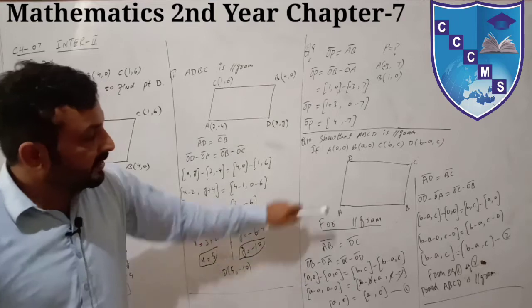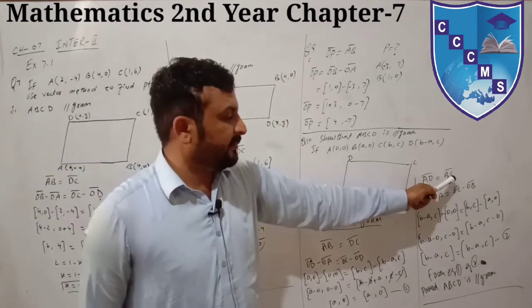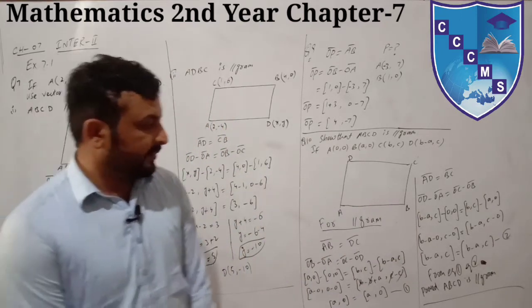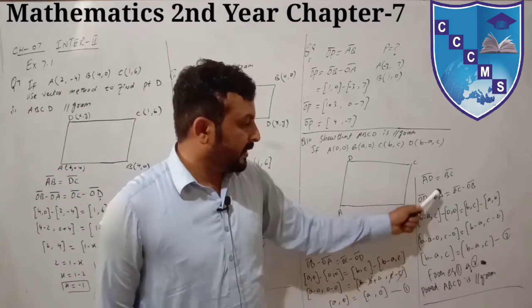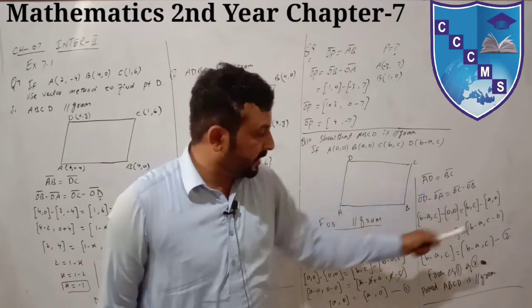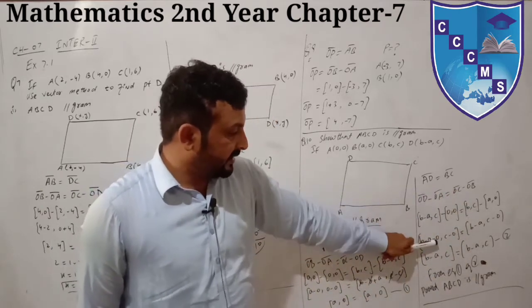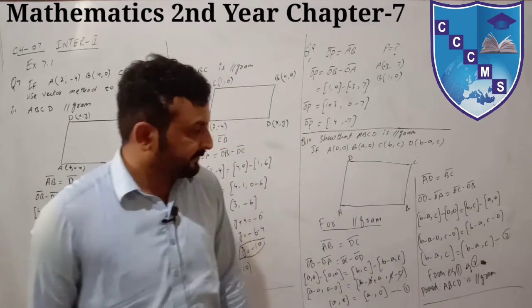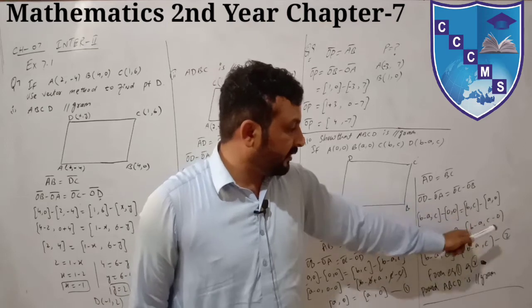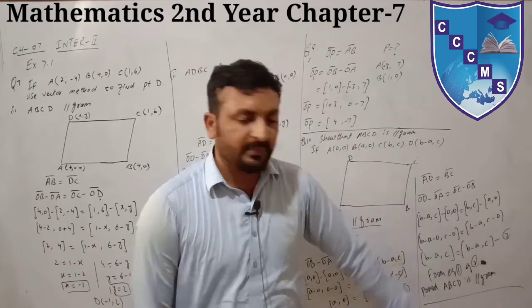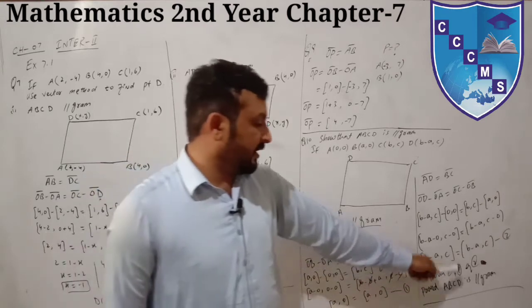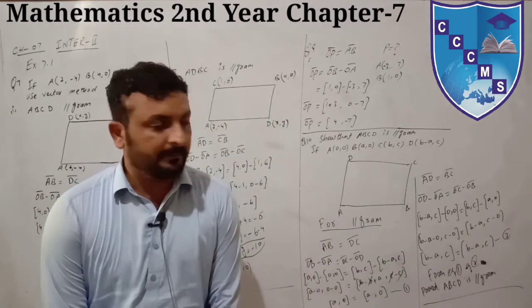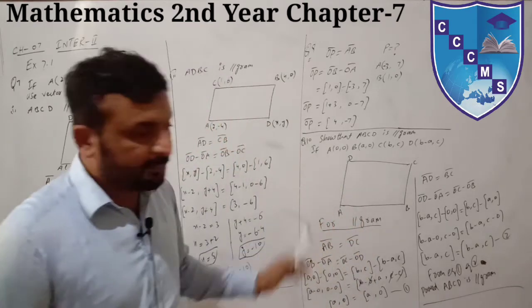Now complete the second condition: AD should equal BC. Apply the formula: OD minus OA equals OC minus OB. Putting in values: OD is (b minus a, c), OA is (0, 0), OC is (b, c), OB is (a, 0). Subtracting: (b minus a) minus 0 equals b minus a, and c minus 0 equals c. For BC: b minus a and c minus 0. Both sides give (b minus a, c). Both sides are equal.